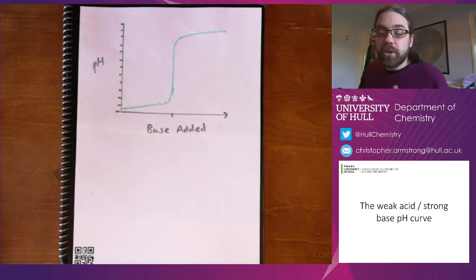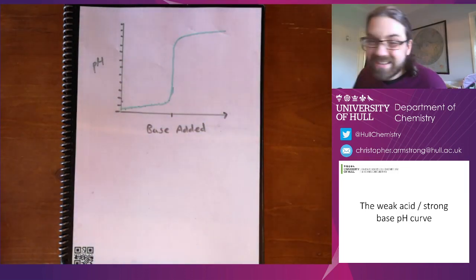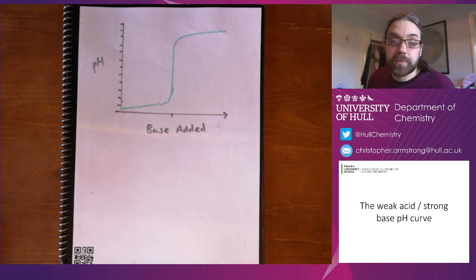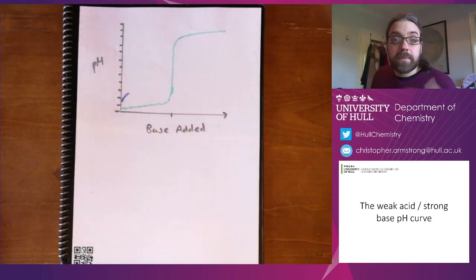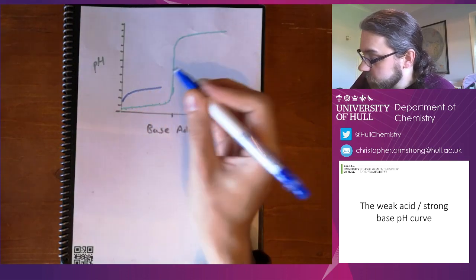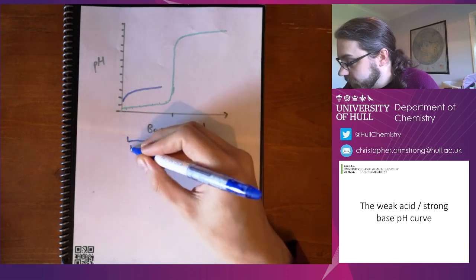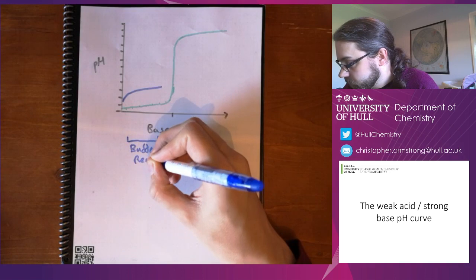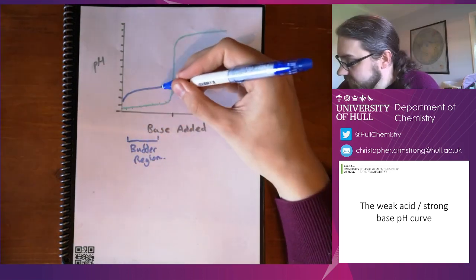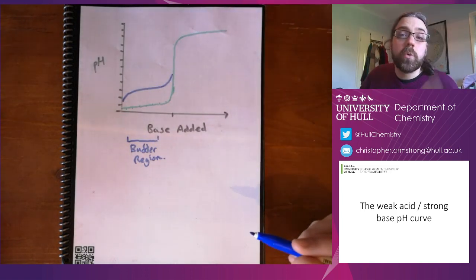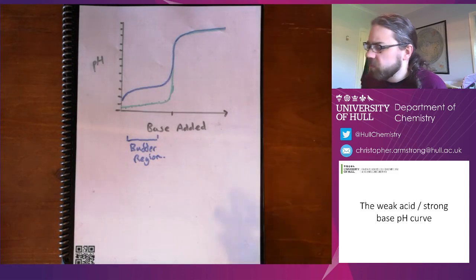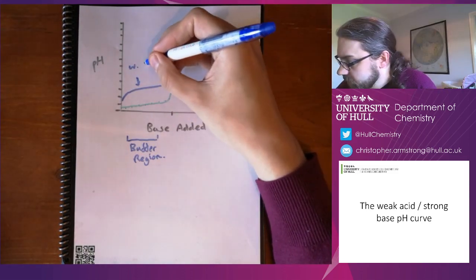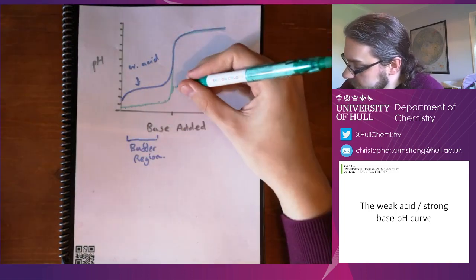For a weak acid, things are a little bit different. Normally, we start at a slightly higher pH. Weak acids don't generate so many protons because they're not all dissociated. The instant you add a little bit of base, there's quite a bit of neutralization, the pH jumps up quite a bit, and then it levels out and goes quite steady for a while in a region that we call the buffer region. And then after that, another slight change upwards, and once the acid is all neutralized, it will just follow the same curve as before. So the blue line here is for a weak acid, the green line that I had originally is for a strong acid.